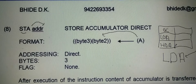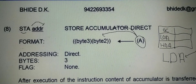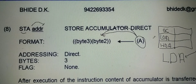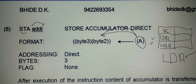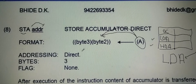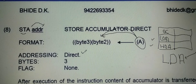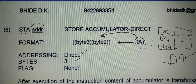In this instruction, whatever number is present in the accumulator, it is transferred to a memory location. That memory location is specified by the 2nd and 3rd byte of the instruction. Whenever the 2nd and 3rd byte represent the memory address, the addressing mode is said to be direct. This is a 3-byte instruction and flags affected equal to none.